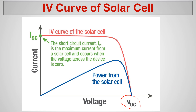Looking at the short circuit current here, this is the maximum value at short circuit. The IV characteristic curve goes like this, and the power curve is like this. Here we use P = VI because we are dealing with DC voltage.